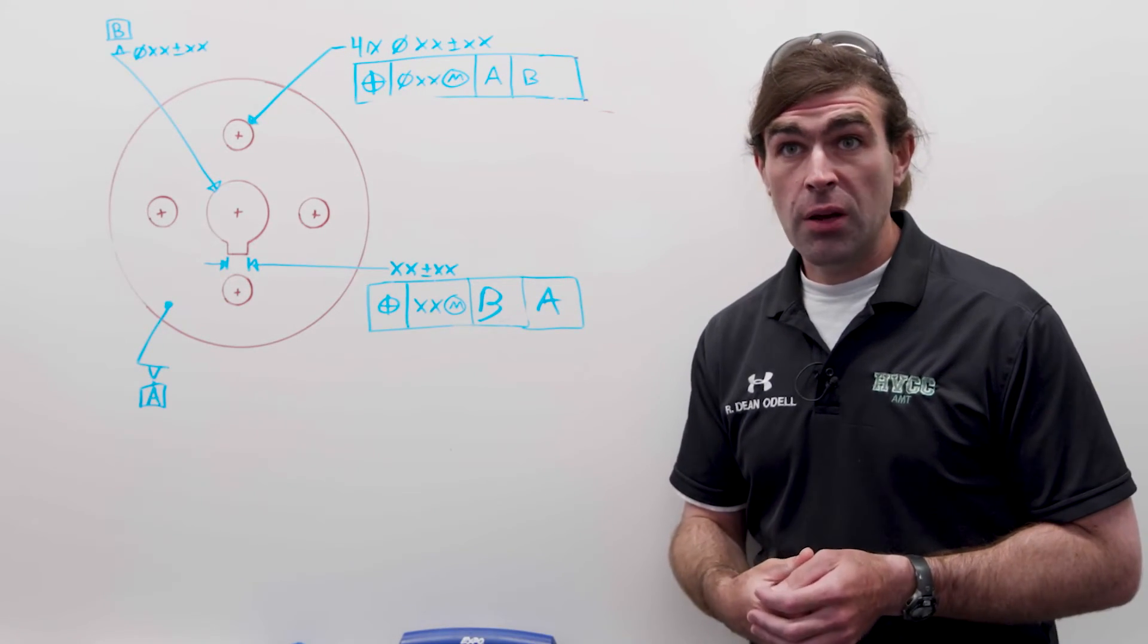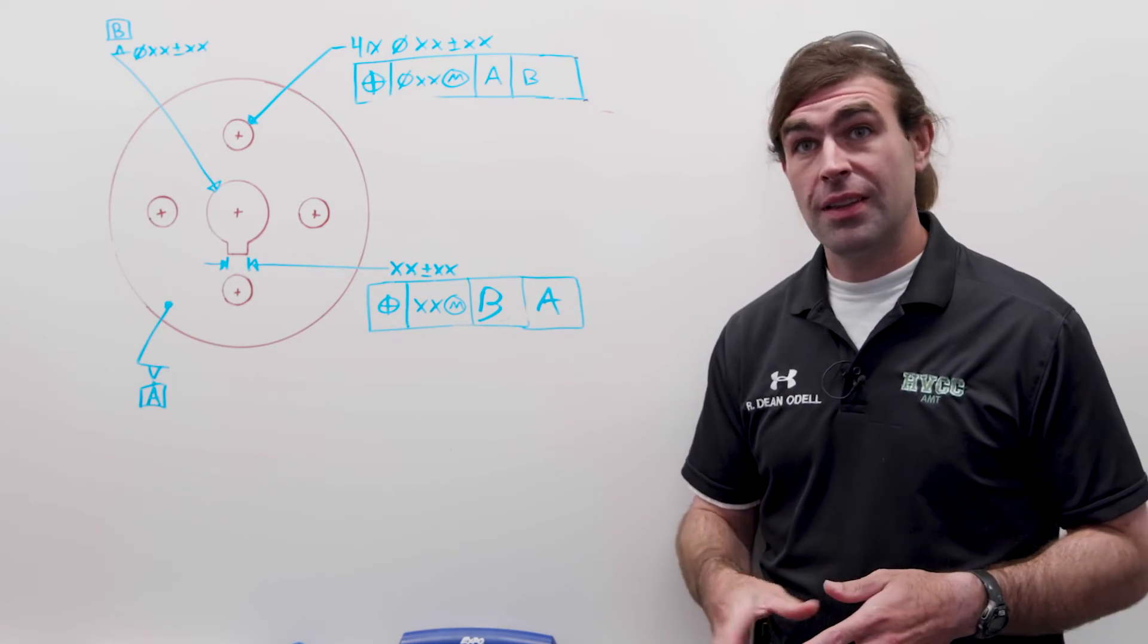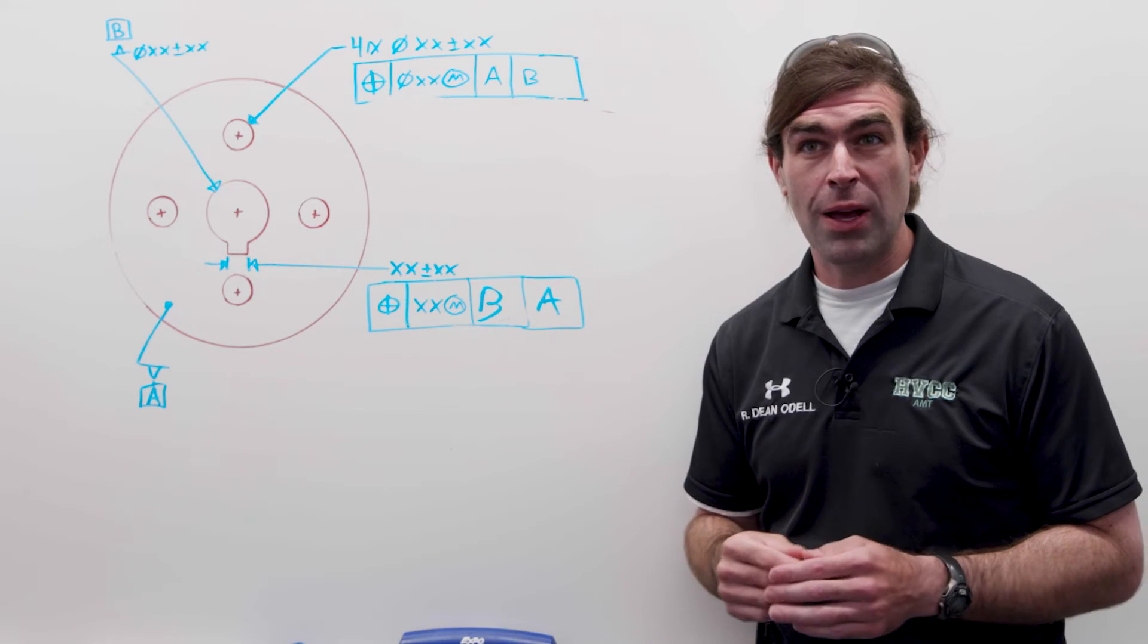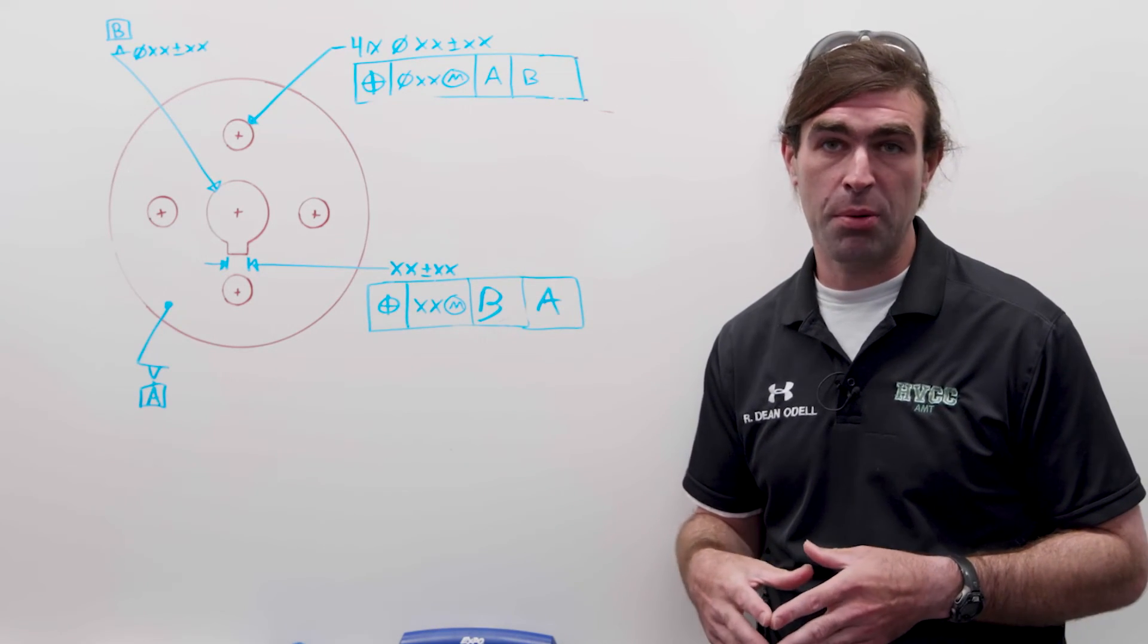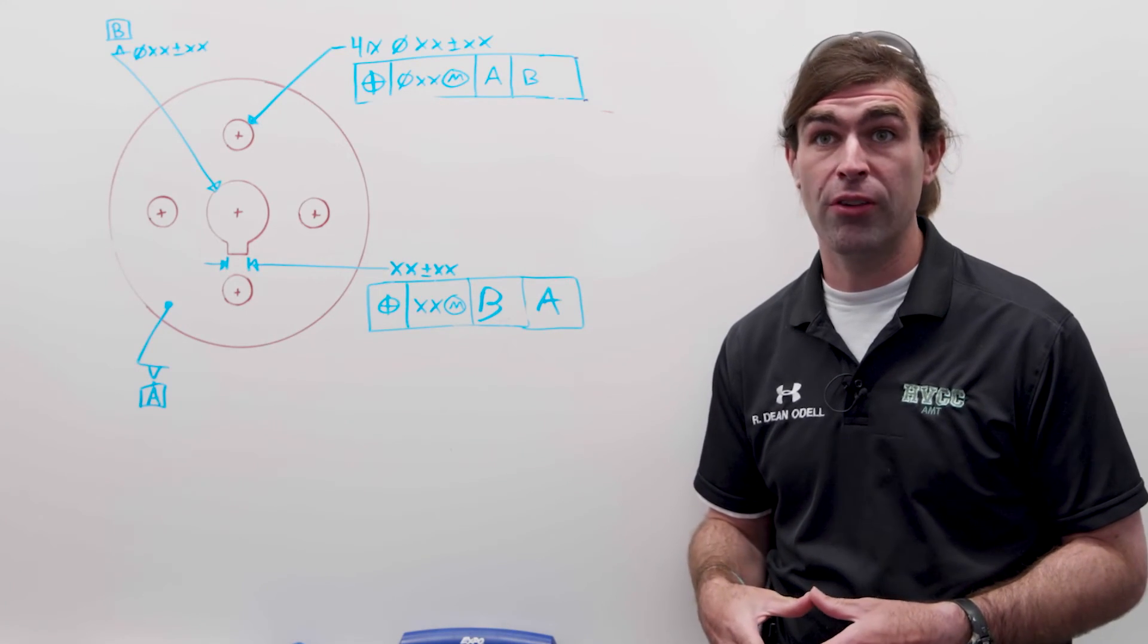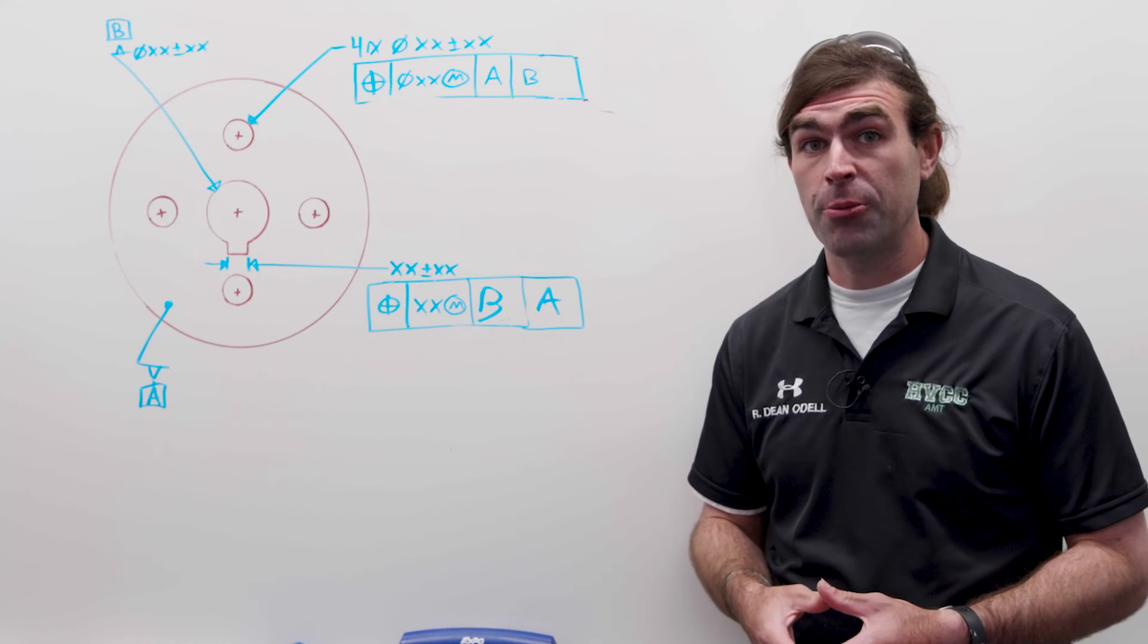So that's it for this video. Just a quick talk about simultaneous and separate requirements. If I didn't mention it, this can be used with profile as well, although I can't actually recall seeing a profile tolerance with a separate requirement, but it's available if you need it. If you enjoyed the video, please like and subscribe. Leave a comment down below.